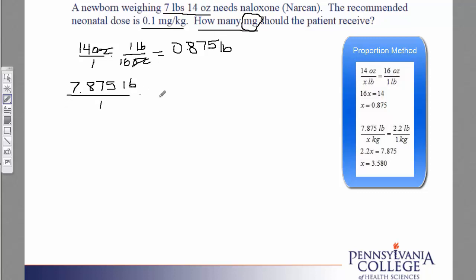We know that there are 2.2 pounds to 1 kilogram. Our labels cancel, and we're ready to go to our calculator.